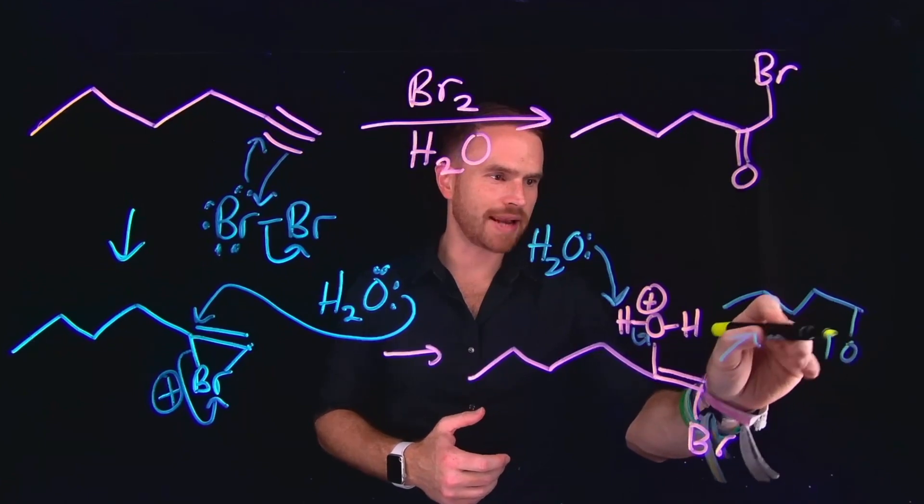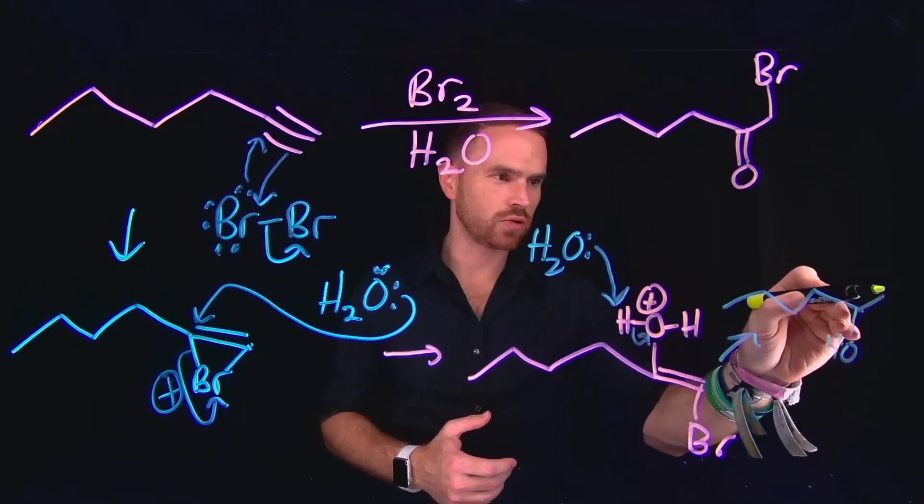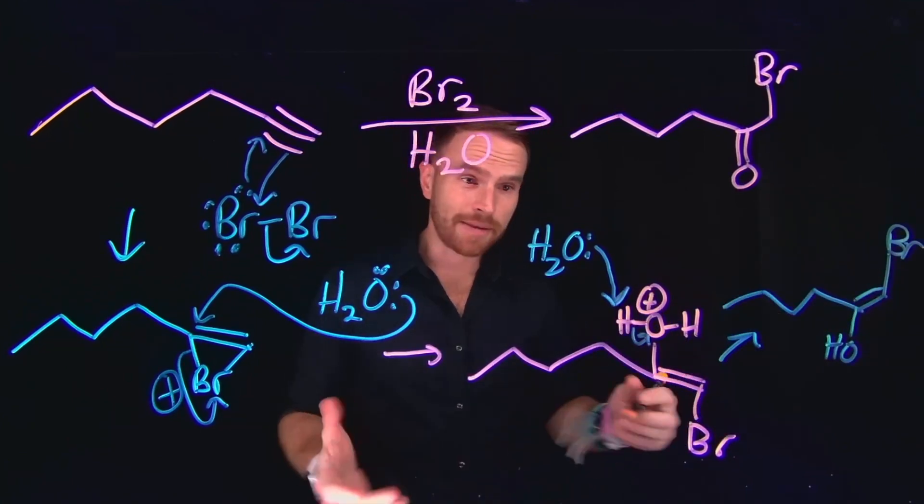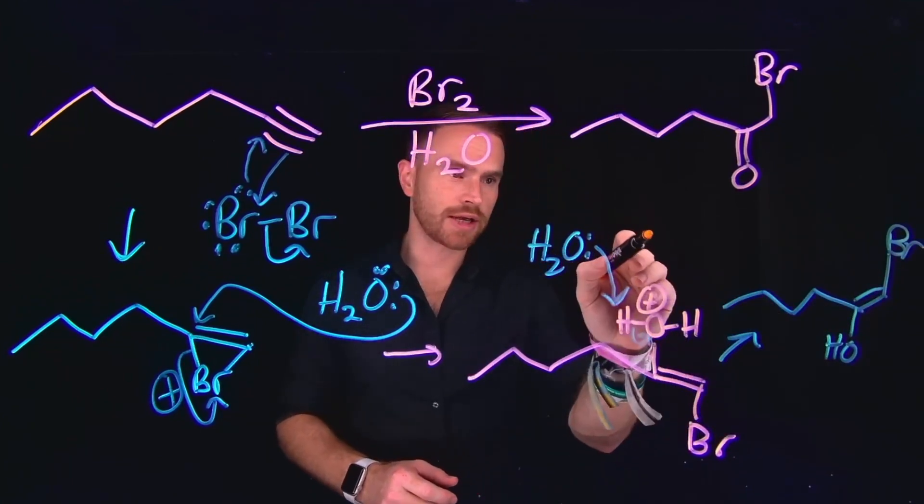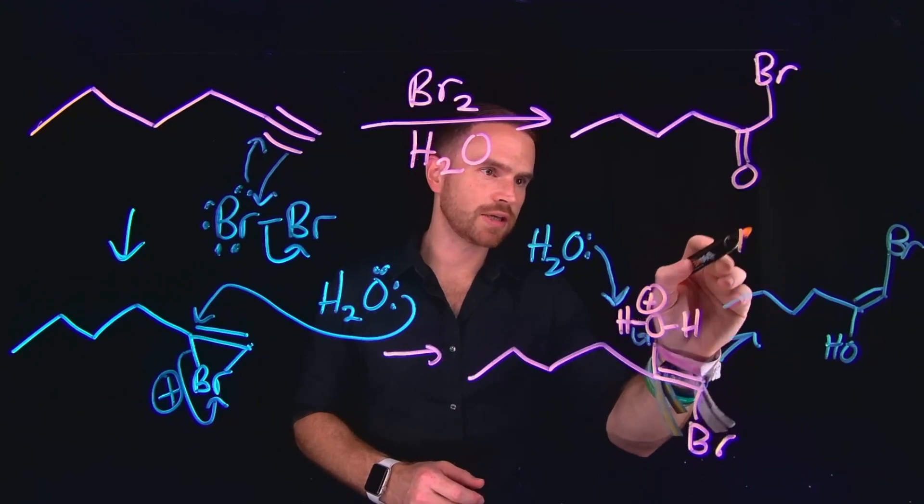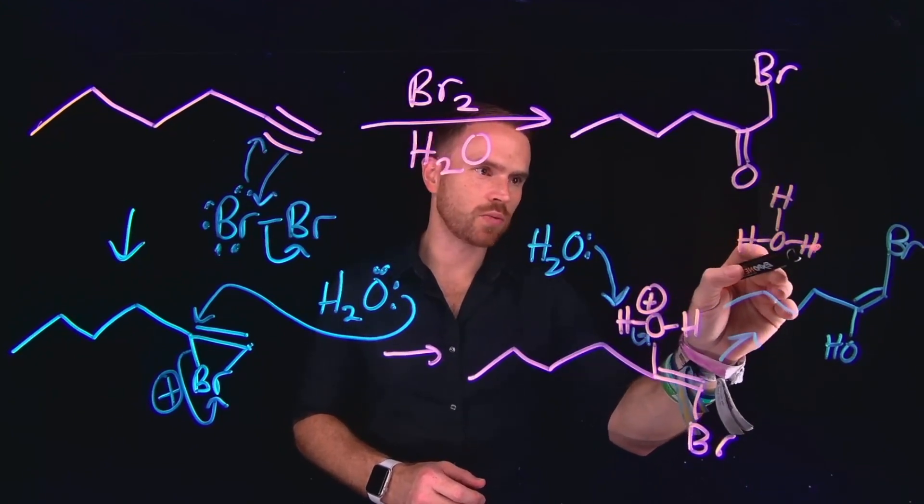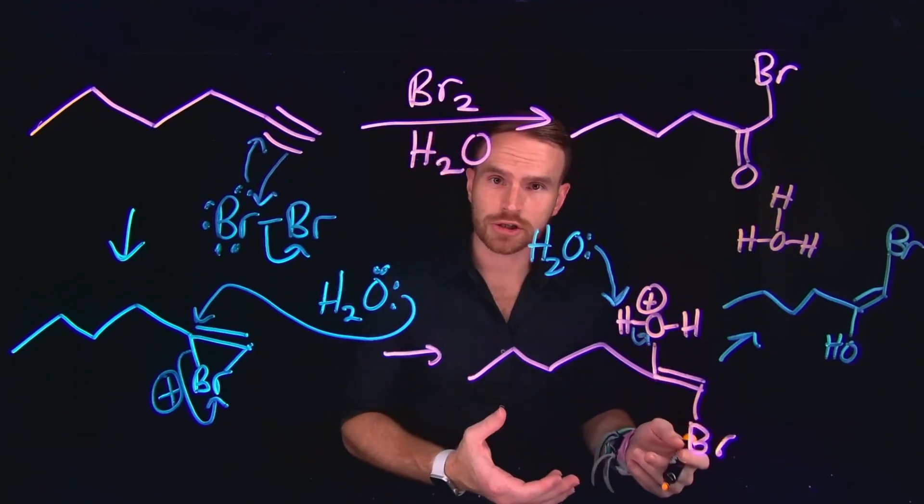So an enol, remember, is an alcohol that is attached to an alkene. And now we have this structure. And importantly, in this step, we generated H3O+. So because we generated H3O+, now we have a situation where we can undergo another proton transfer.